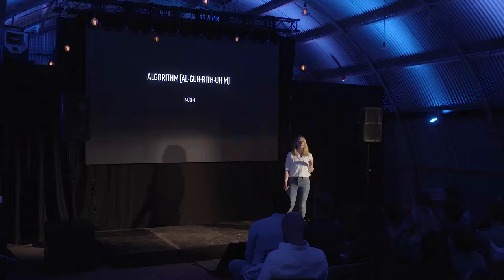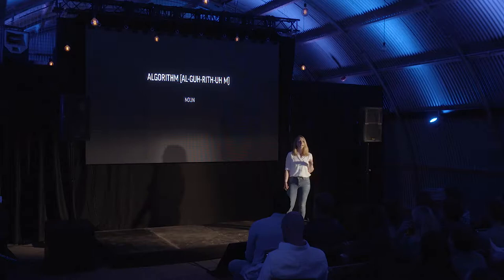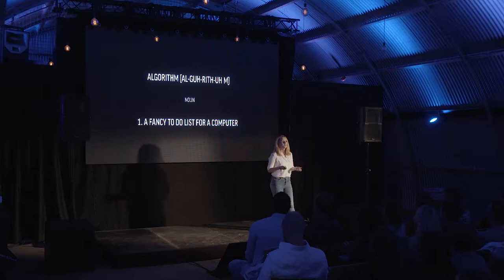Some of us might have struggled with the sequence we saw earlier. That is because our brains are able to analyze a couple of variables at the same time — three in this case. A computer, however, is able to analyze way more variables, way quicker than we do, and it uses algorithms to do so. What again is an algorithm? An algorithm is nothing more than a fancy to-do list for a computer — a well-defined process that allows a computer to solve a complex problem.